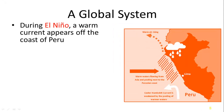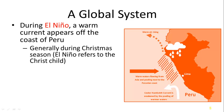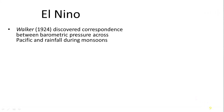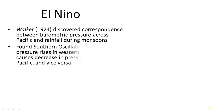El Niño is an appearance of warm water which occurs in the Pacific Ocean near the western shores of Peru and Colombia, generally during Christmas time — which is why it's referred to as El Niño, meaning 'the child.' The southern oscillation refers to the fluctuation between warm and cool waters in this area. Walker in 1924 discovered the correspondence between barometric pressure and Pacific rainfall during monsoons, finding that the southern oscillation showed a change in barometric pressure and a decrease in pressure in the eastern ocean and vice versa.